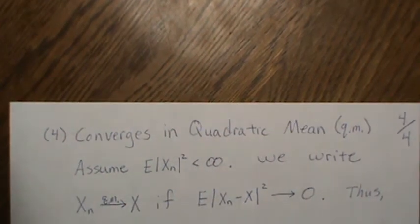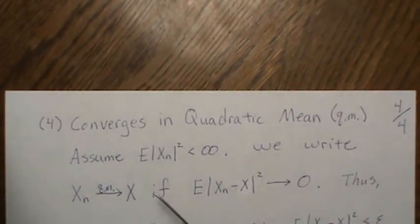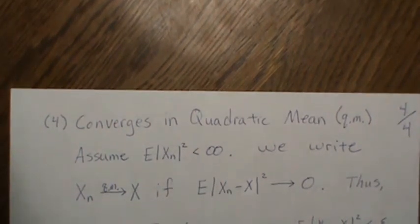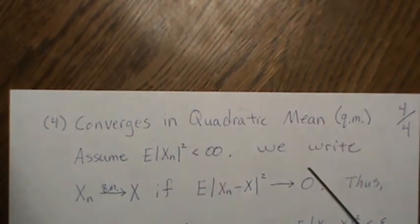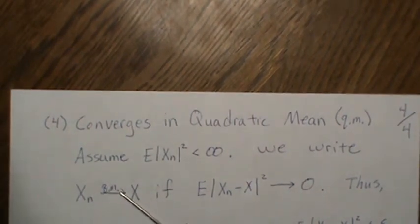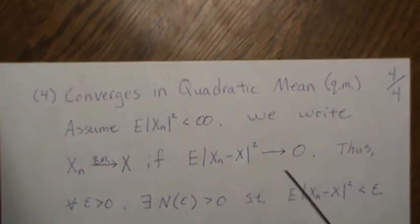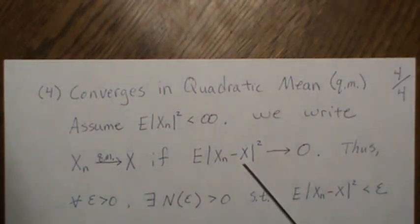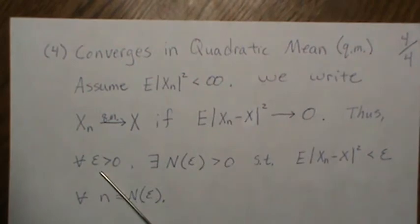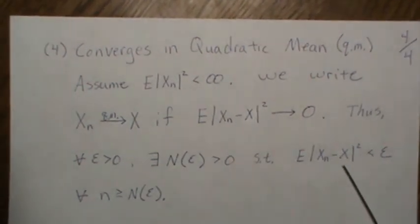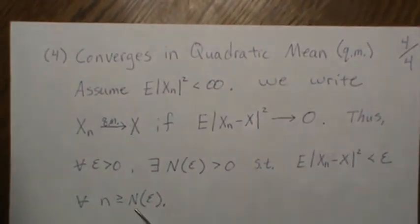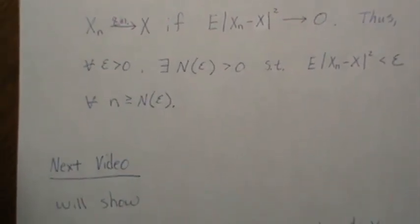The last convergence in this mini series is convergence in quadratic mean. We assume a finite second moment — and a finite second moment also implies lower moments are finite, so the mean is finite. We write X_n →^(QM) X. This holds if E[(X_n - X)²] → 0. Formally, for every ε > 0, there exists an N (a function of ε) such that E[(X_n - X)²] < ε for all n > N.